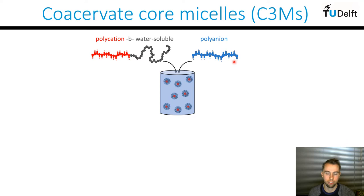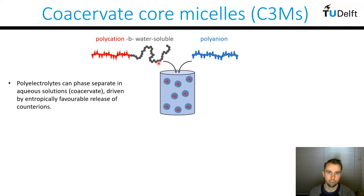I'd like to firstly introduce what coacervate core micelles are. These are self-assembled nanoparticles which can form in water when you mix polycations and polyanions, where one of these polymers has a water-soluble block attached to it. They consist of a polyelectrolyte core and a shell of neutral water-soluble blocks, and they form because polyelectrolytes can phase separate in aqueous solutions. This is driven by the entropically favorable process where, upon these polyelectrolytes condensing into the coacervate phase, their bound counter ions can release into the bulk solution.